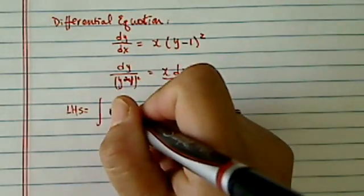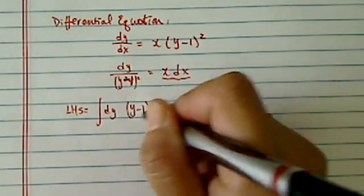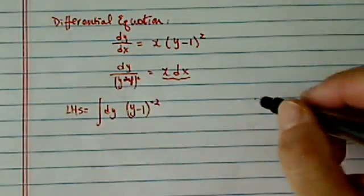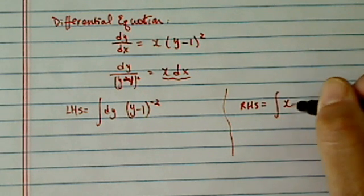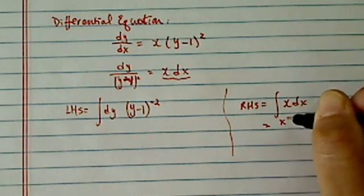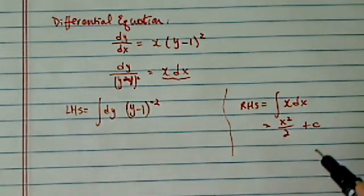So let's have left-hand side and right-hand side. Left-hand side is equal to dy, and then y minus 1 to the minus 2. And then right-hand side is equal to x dx. This one is x squared over 2 plus c here.